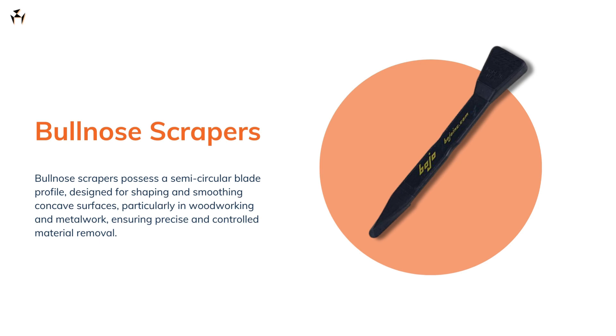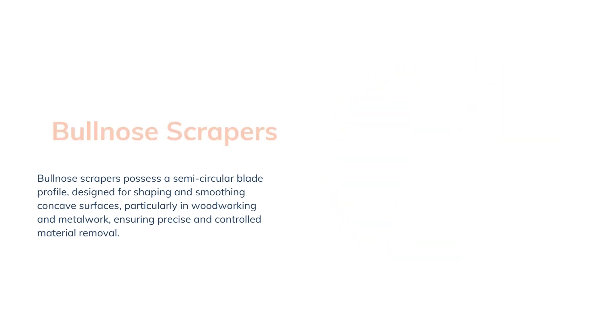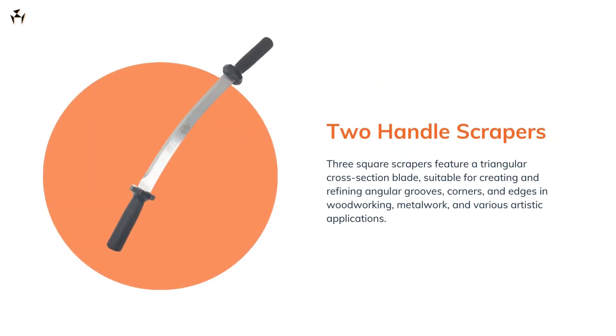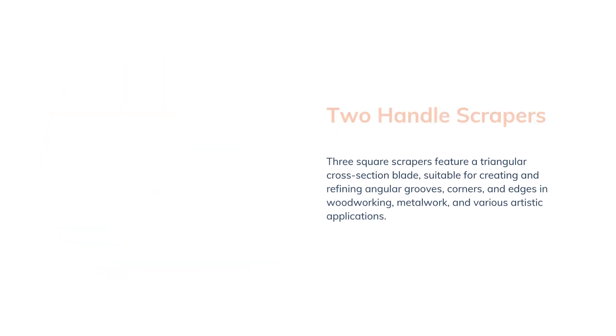They're really useful for scraping big bearings. To do this, you can either scrape along the length or move around the bearing's outer edge. People use the two-handle scraper for scraping big flat areas and also for scraping sizable curved surfaces.